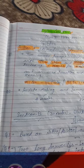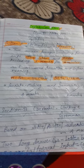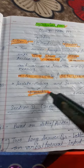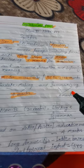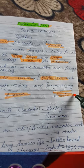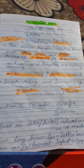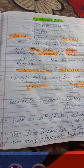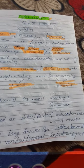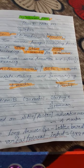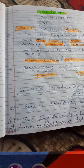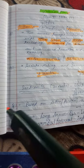Question 2 covers note making, which will be for four marks, and summarizing, which will also be for four marks. Section B is of 30 marks and is called the writing and grammar section.